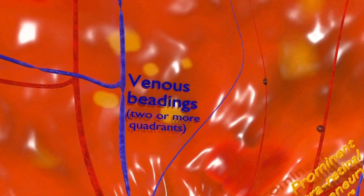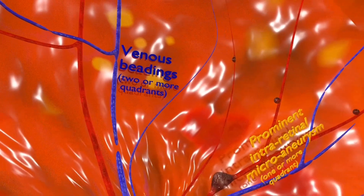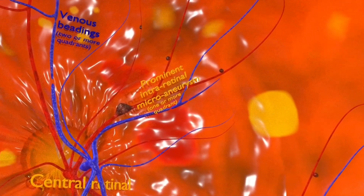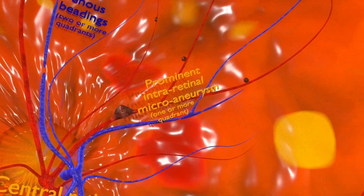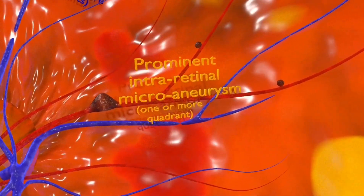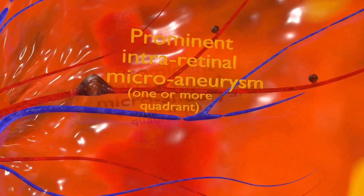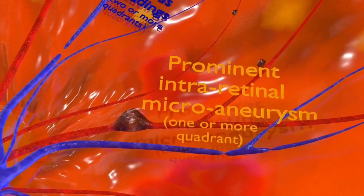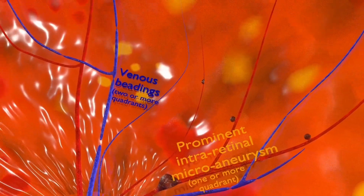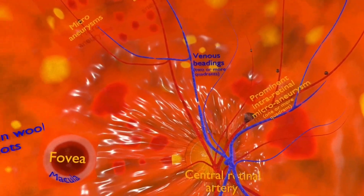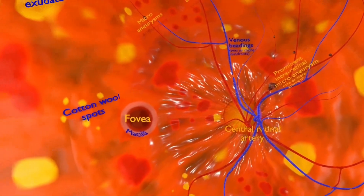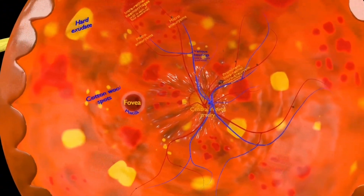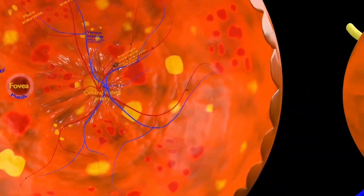Intraretinal hemorrhages can also be seen in one or more quadrants.